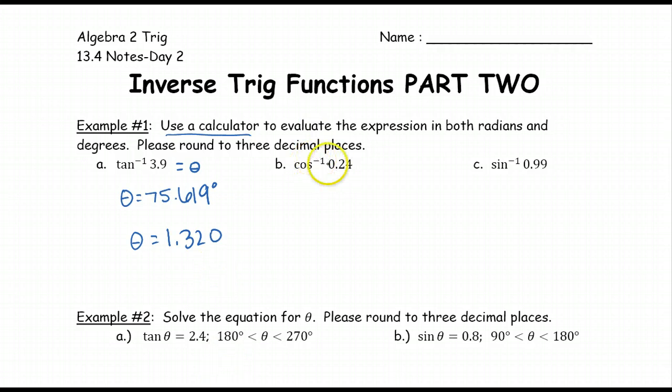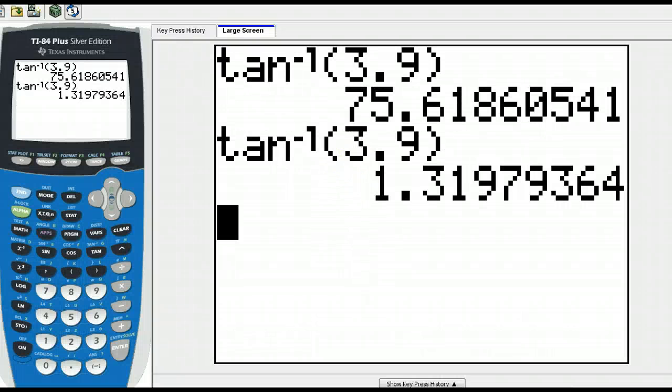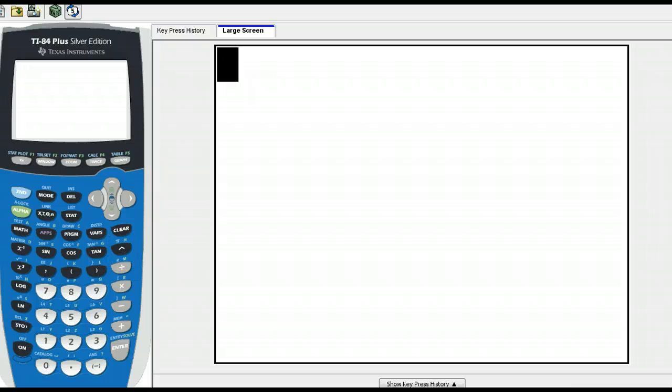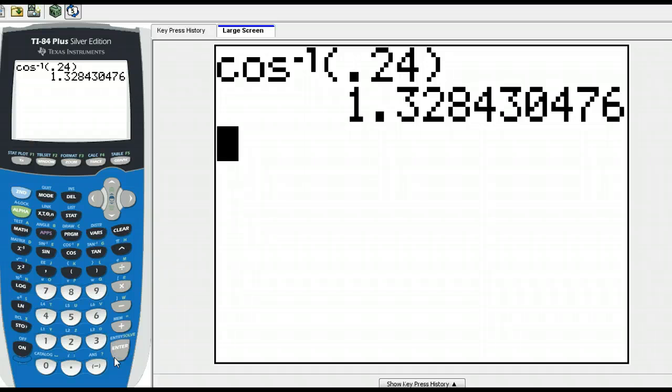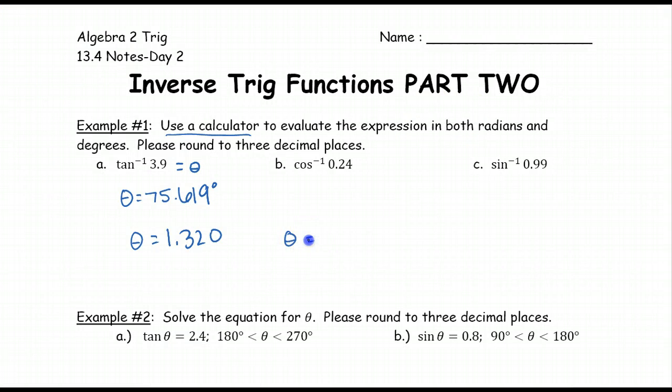Part b, cosine inverse of 0.24, that's the same. Well it depends what you want to find first. Since my calculator is already in radian mode I'm just going to find the radians first. So second cosine of 0.24, that's 1.328 radians.